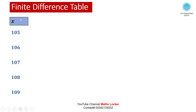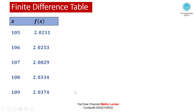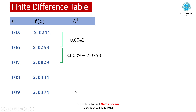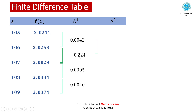Write the finite difference table. First, write the values of x in the first column, then f(x) in the second column, and compute the differences: first differences, then second differences (second minus first, third minus second, fourth minus third).